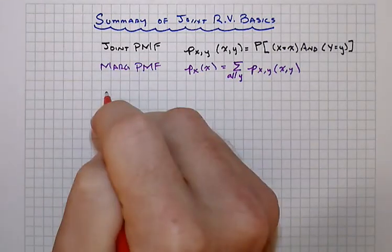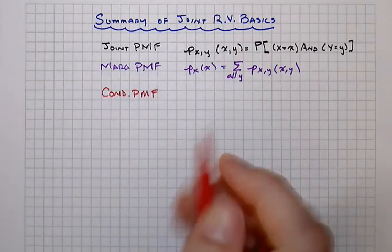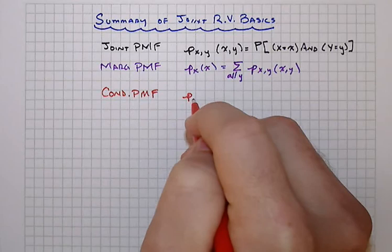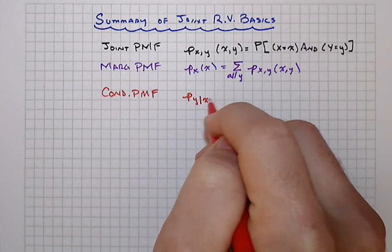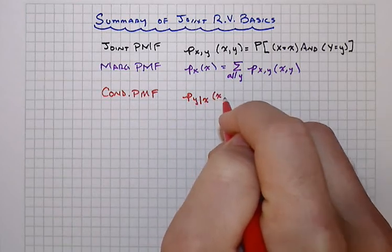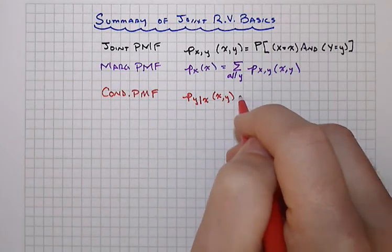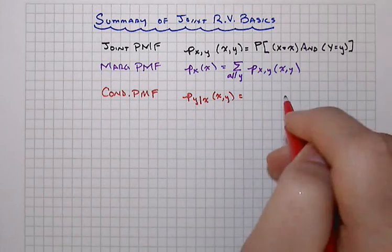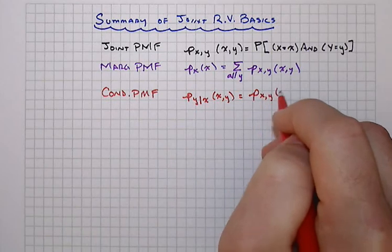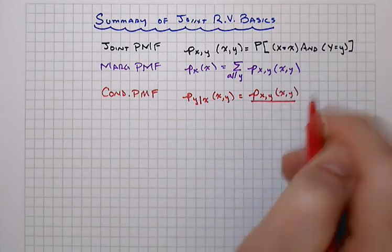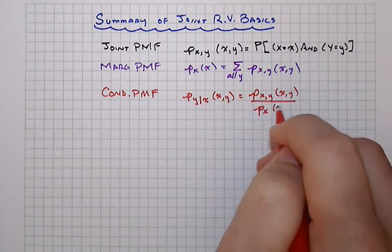We also talked about the conditional probability mass function. Note that we use that vertical bar for the conditioning event, so probability of y given x. Sometimes people put the vertical bar right in the arguments to this function, and that equals the joint distribution divided by the marginal, the thing that we're conditioning upon.